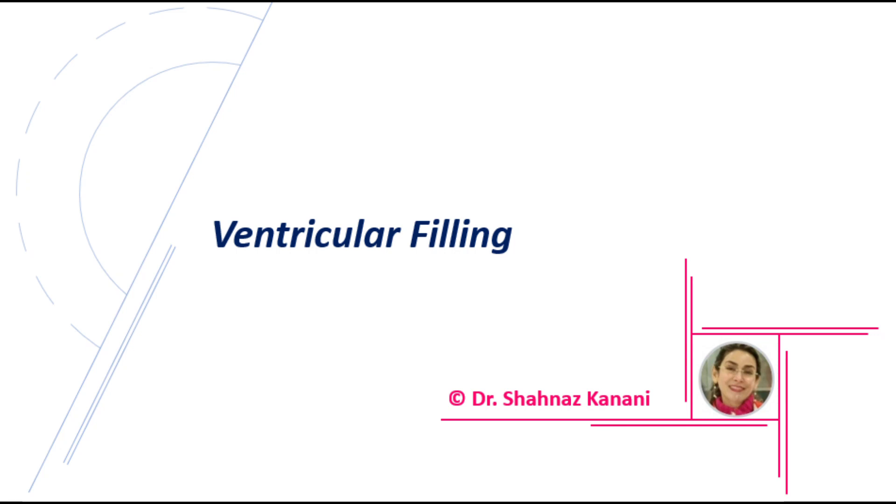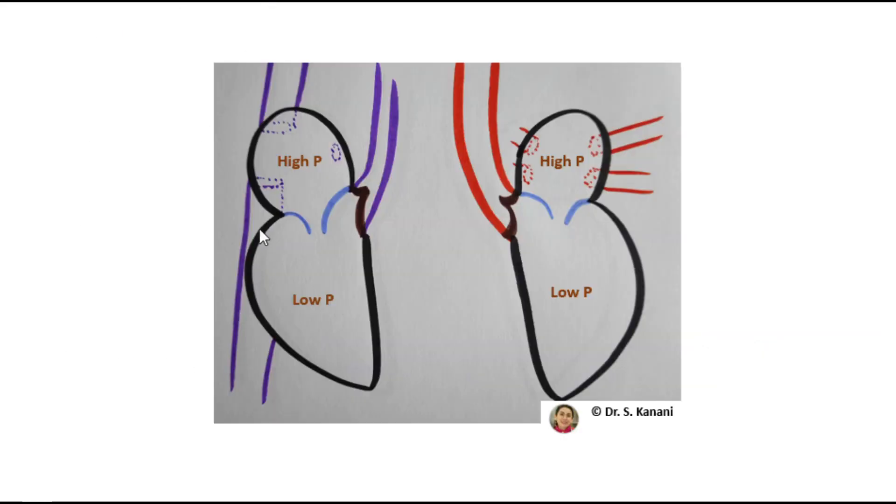Ventricular filling is one of the phases of the cardiac cycle, and the name tells us that during this phase, ventricles are receiving blood. As soon as the wall of ventricles relax, the pressure inside the ventricles quickly drops, so we end up with higher pressure inside the atrium because atria constantly receive blood through the veins.